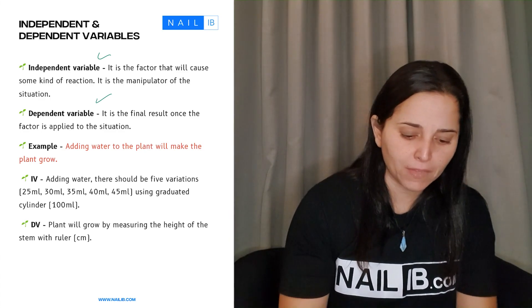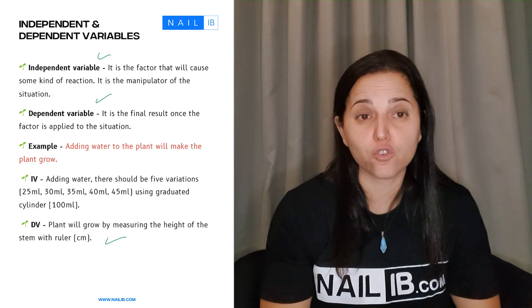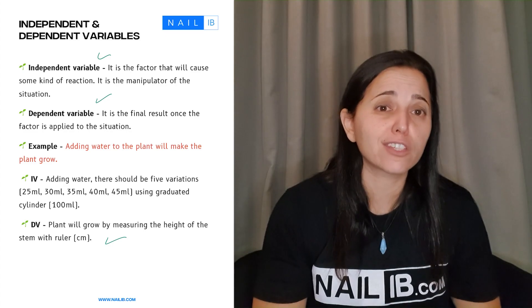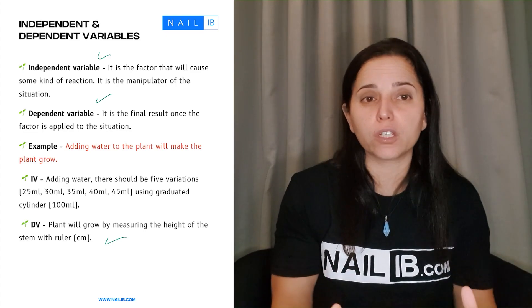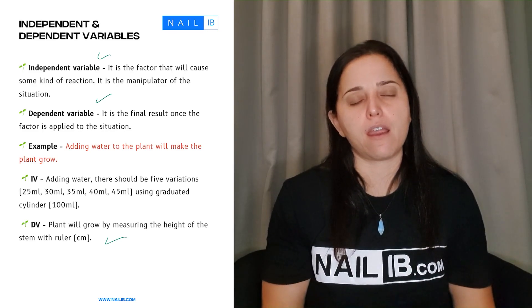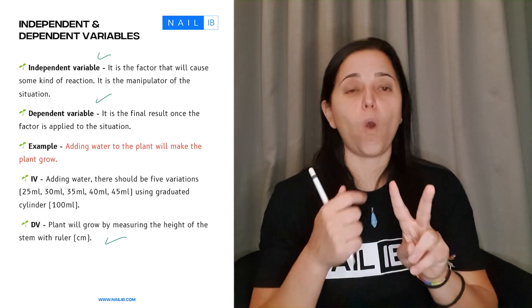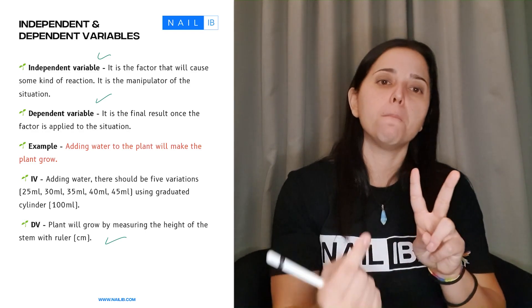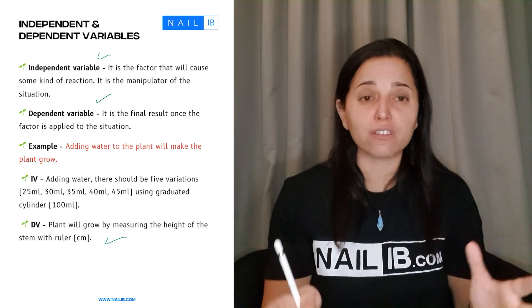When it comes to DV which means the dependent variable you have to be able to measure it. So if your lab report is all about changing colors, the changing colors is just a qualitative result. It's a description. There has to be numbers in there. So make sure that your dependent is two types. One that you can get numbers and one that you can get descriptions.